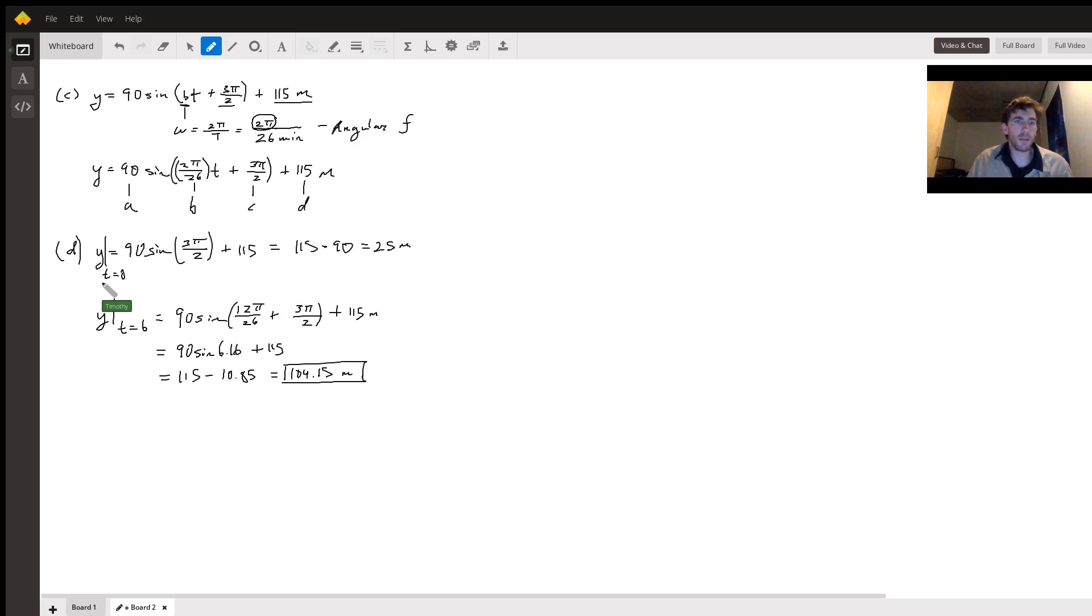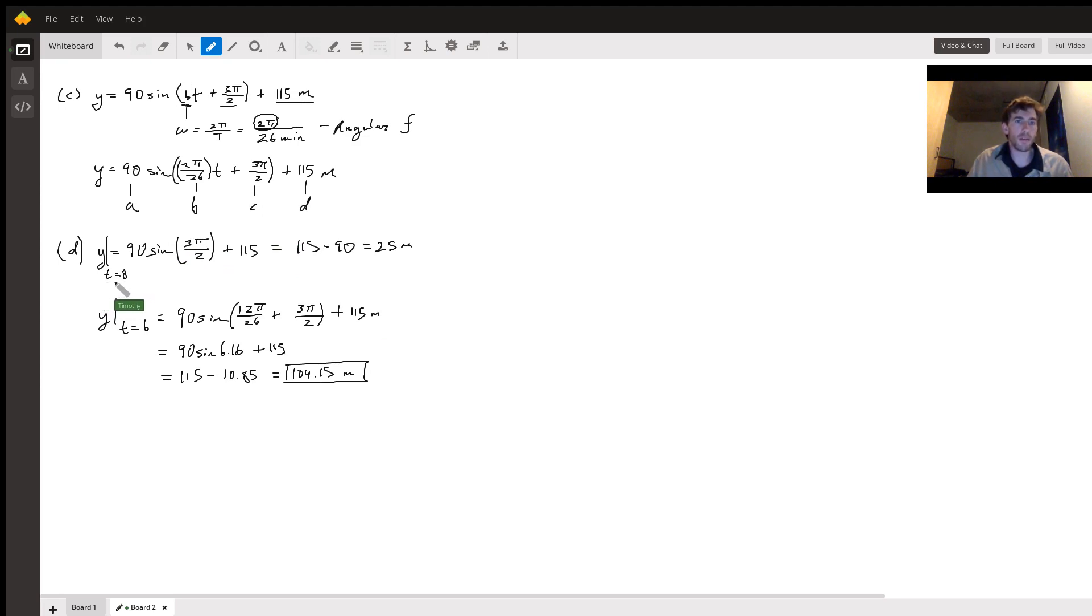When time equals zero, what is y? So y at t equals zero equals 90 sine of 3 pi over 2, because plugging zero into here makes this term zero plus 115, and that equals 115, and then this turns out to be negative 1. And so that becomes 115 minus 90, and that equals 25 meters. Is he 25 meters above the ground when he starts? Yes. So that verifies the equation.